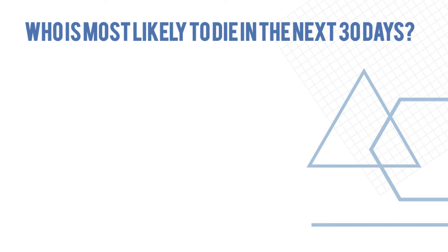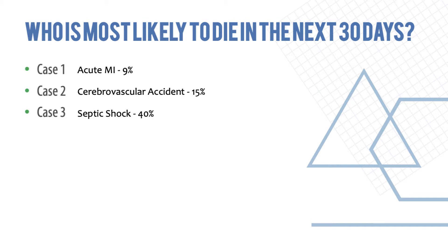The million-dollar question is: out of these three cases, who is most likely to die in the next 30 days? Case one was an acute MI, with a likely mortality of about 9%. Case two was a stroke patient, with a reported mortality of about 15%. Case three was septic shock, with a likely mortality of about 40% — making case three the most likely to die within the next month.